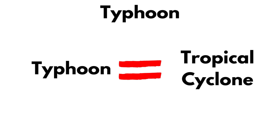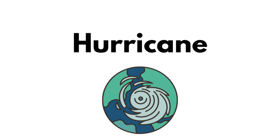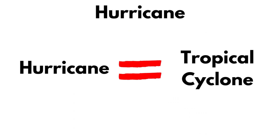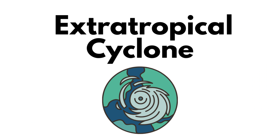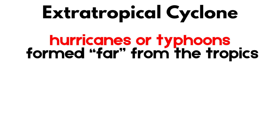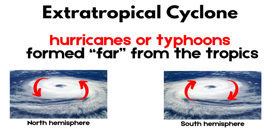Typhoon: a name given to a tropical cyclone formed in the Northwest Pacific. Hurricane: a name given to a tropical cyclone formed in the Atlantic Ocean or Northeast Pacific. Extratropical cyclones occur in mid-latitude regions, formed in areas distant from tropical regions. In the Northern Hemisphere, extratropical cyclones rotate counterclockwise, while in the Southern Hemisphere, they rotate clockwise.